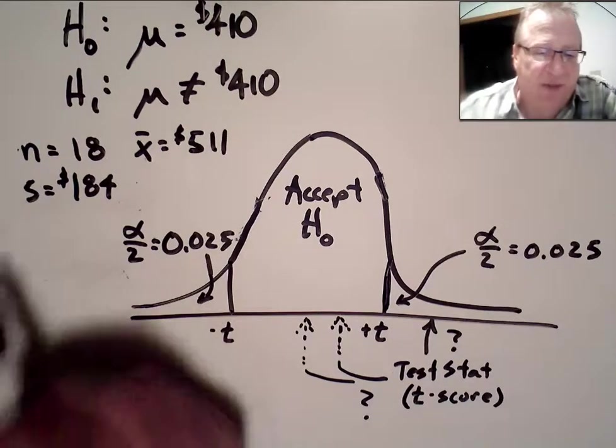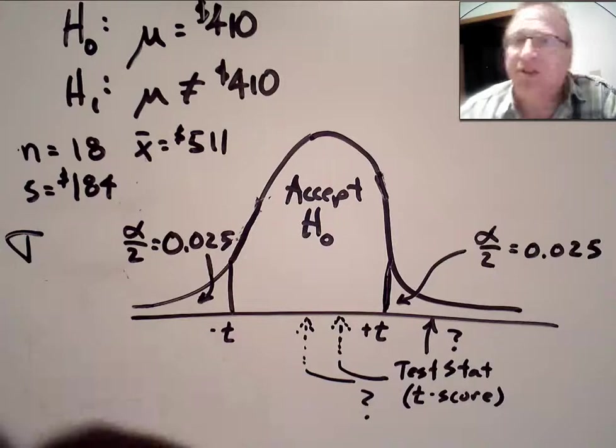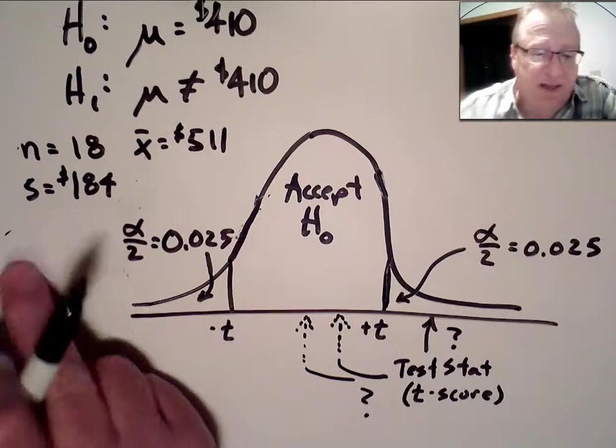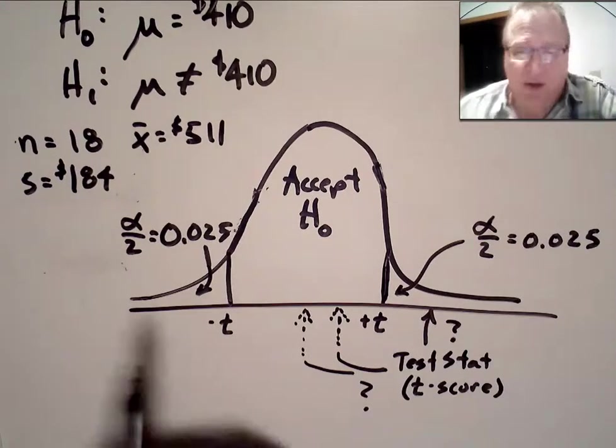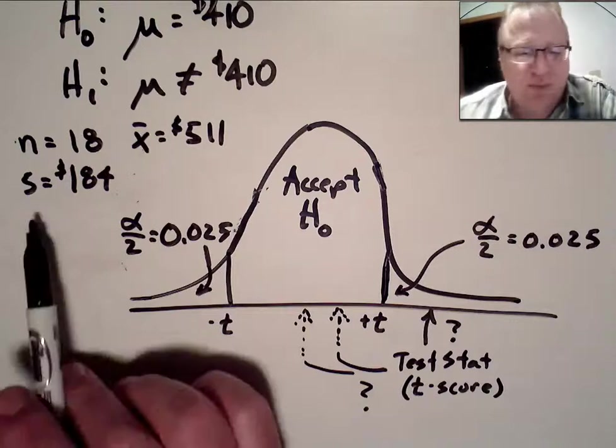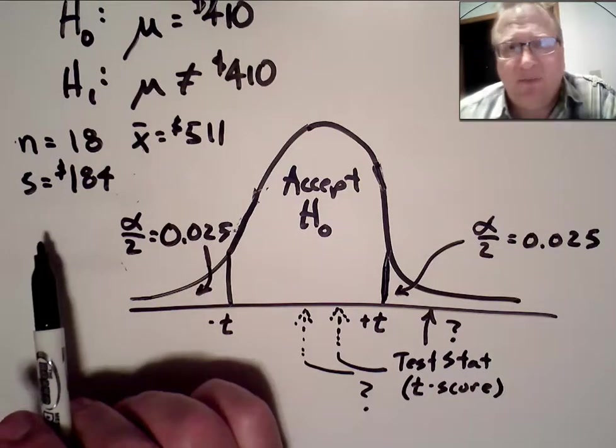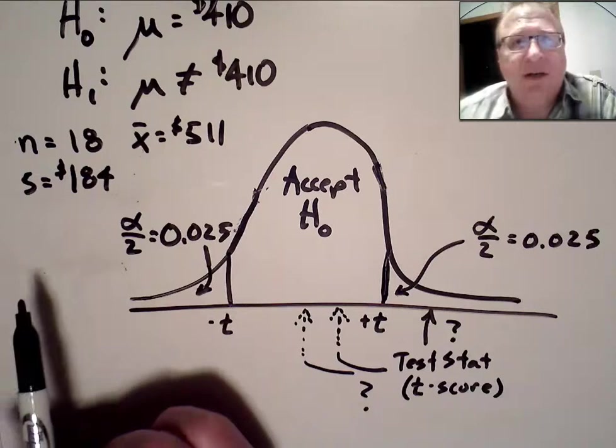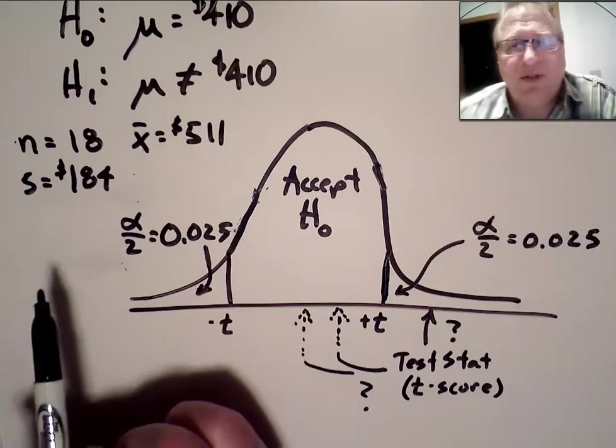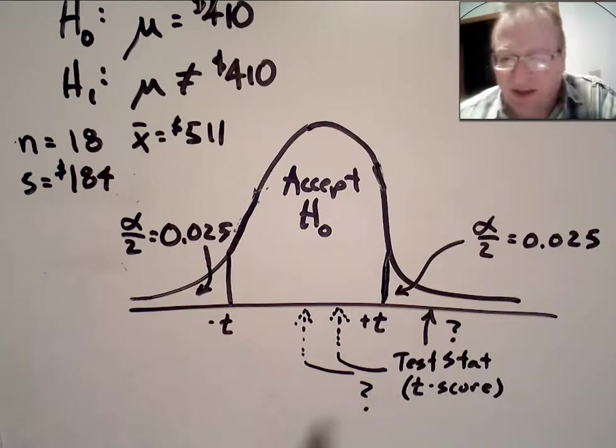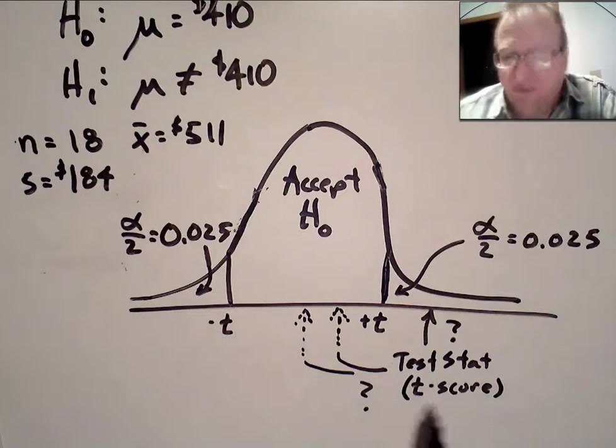Remember, population standard deviation is sigma, like that. So, because we are using sample standard deviation, we must use the student's t-distribution. And we're going to calculate a t-score for our test statistic.